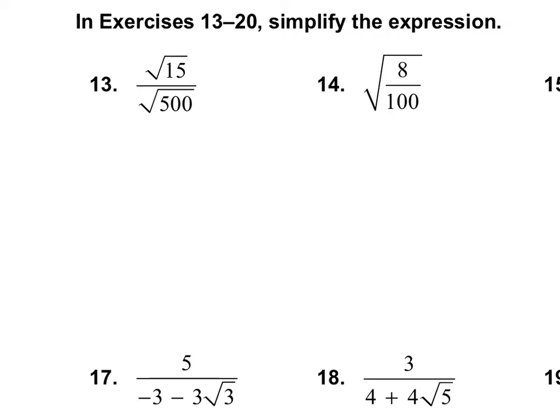We need to simplify all these expressions here. If you look at numbers 13 and 14, I'm going to treat these two different ways. Sometimes it's easier to simplify the fraction first, and sometimes it's easier not to. For number 13, I notice that I can change this to a big square root of 15 over 500, and then simplify, because 500 is not a perfect square but 100 is. So if I divide by 5 on the top and bottom, it'll make this a little bit easier.